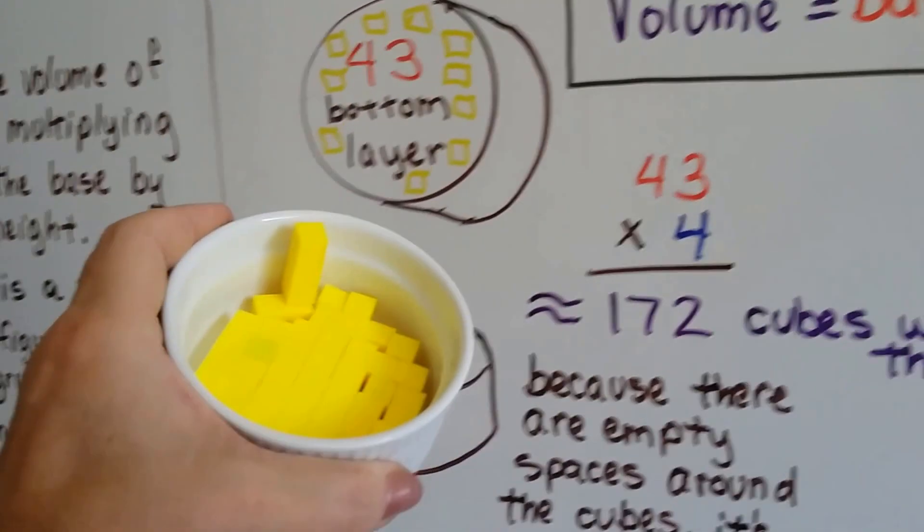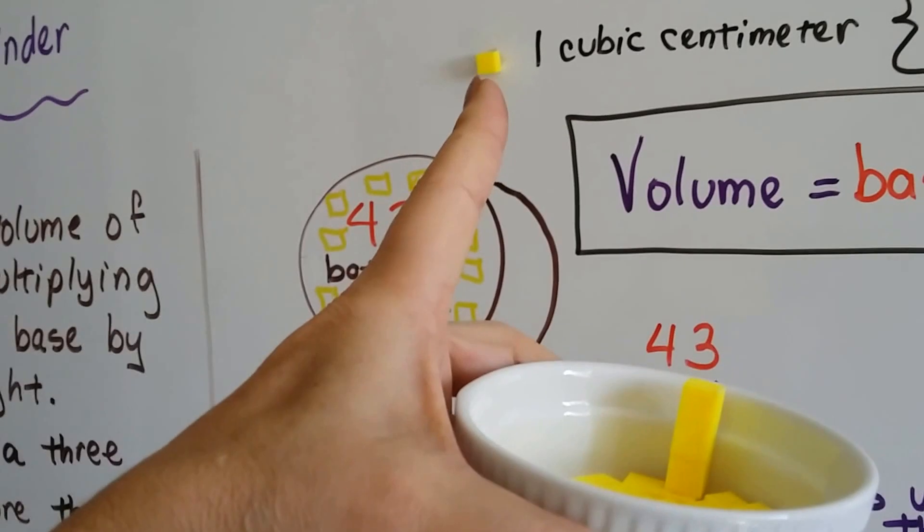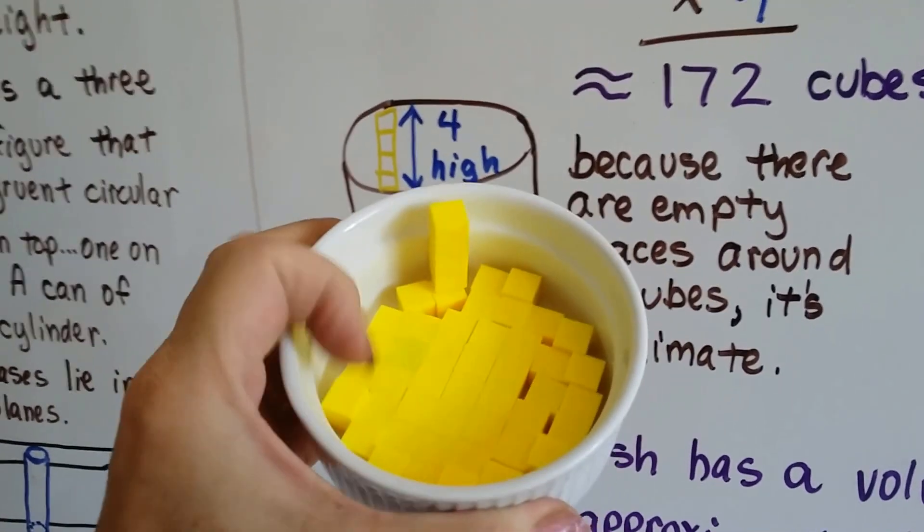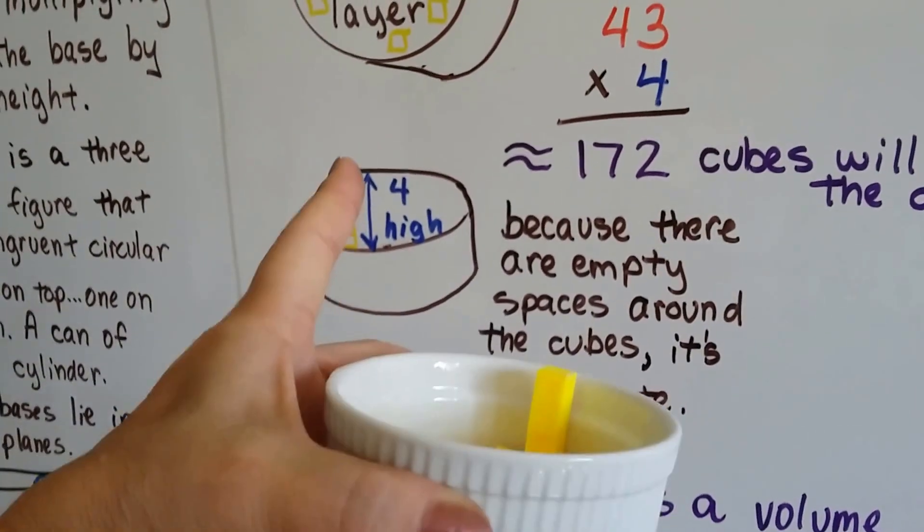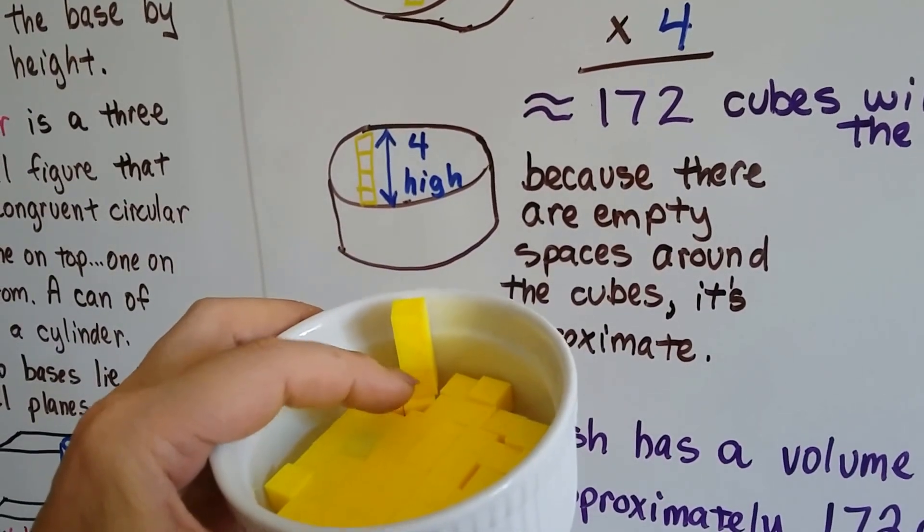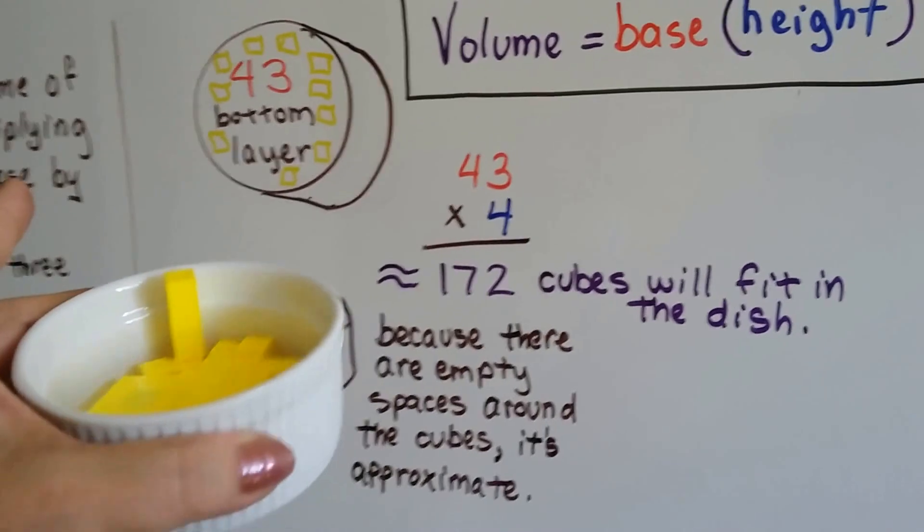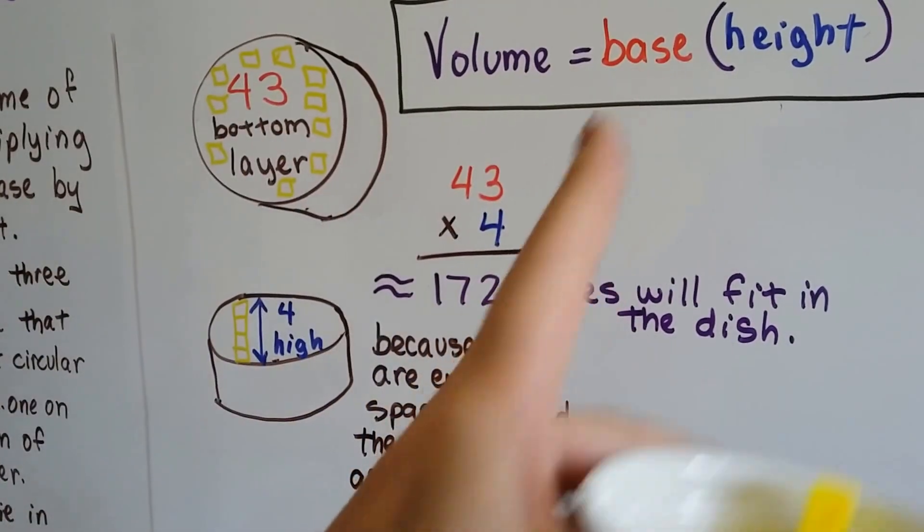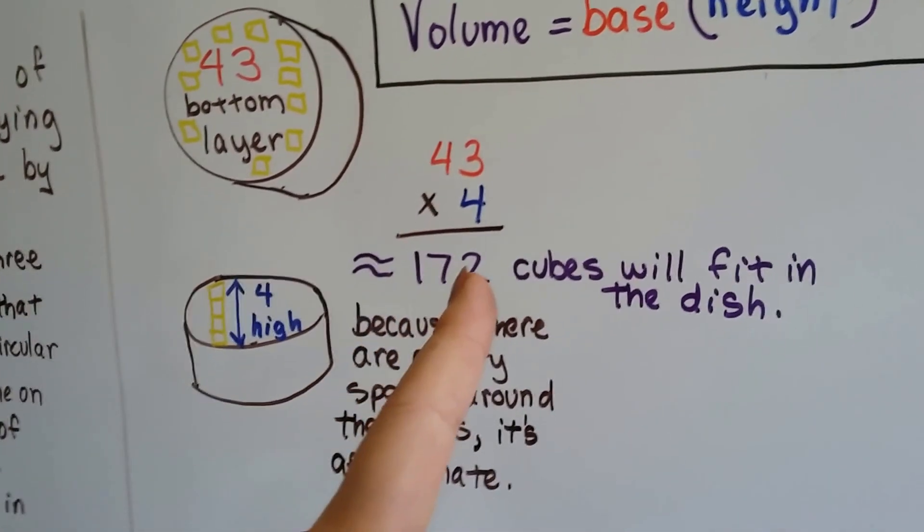I filled a dish, this dish, and I got 43 little one cubic centimeter cubes to fit along the bottom here. I counted them. And there's 43 of them there. And I could stack four of them high along the side here. One, two, three, four. So to find the volume of this little white dish, I did 43, which was the base, times the height, which was four cubes. And I got 172.